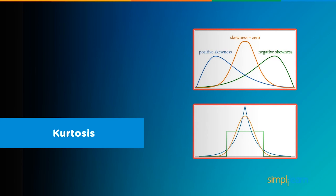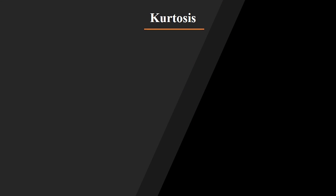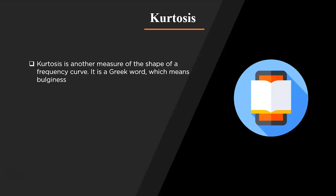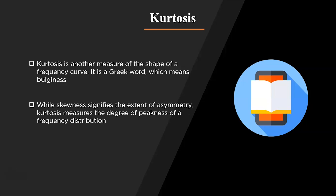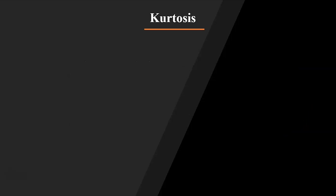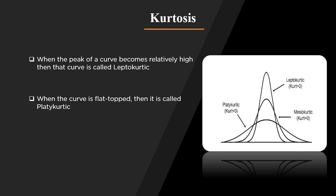Now that we have discussed symmetrical and skewed distribution, let us move on to understand kurtosis. Kurtosis is used to find the presence of outliers in our data — it gives us the total degree of outliers present. The data can be heavily tailed and the peak can be flatter. While skewness signifies the extent of symmetry, kurtosis measures the degree of peakness of a frequency distribution. When the peak of the curve becomes relatively high, the curve is called leptokurtic, and when the curve is flat it is called platykurtic.